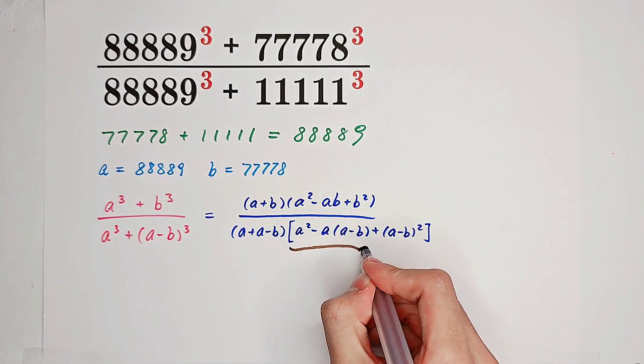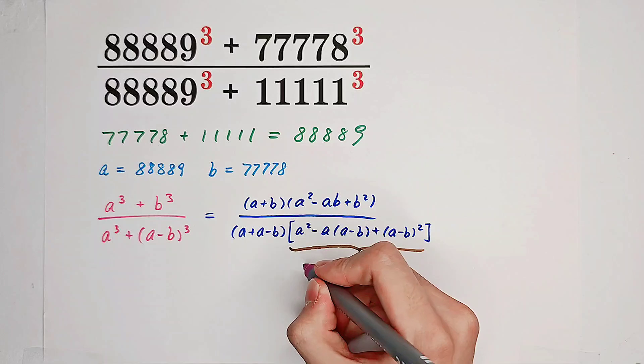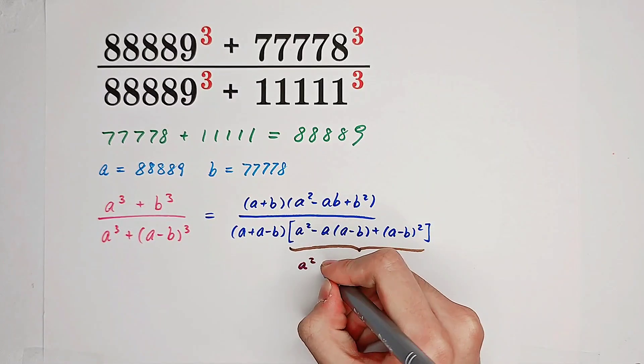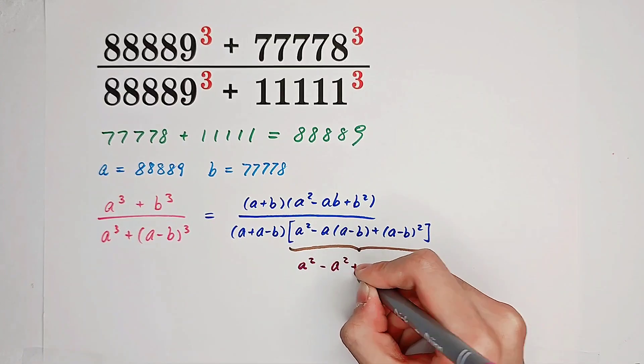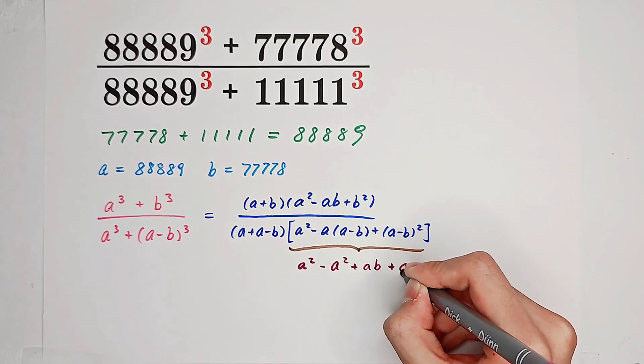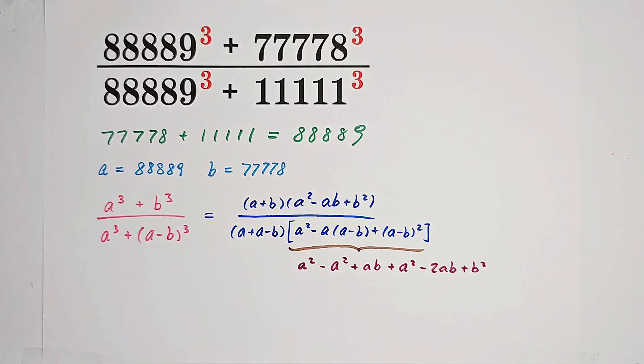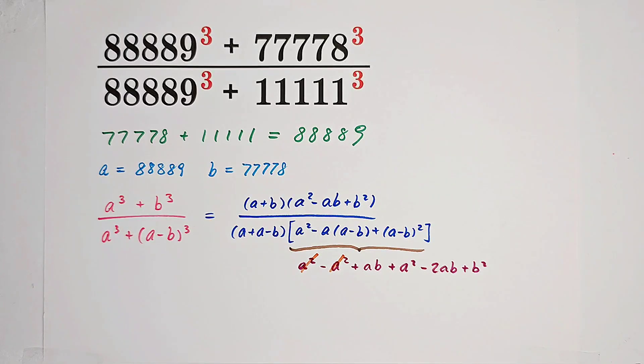Now if you simplify this part, it is A squared minus A squared plus AB plus A squared minus 2AB plus B squared. And now you can see A squared A squared cancels, plus AB minus 2AB is minus AB.